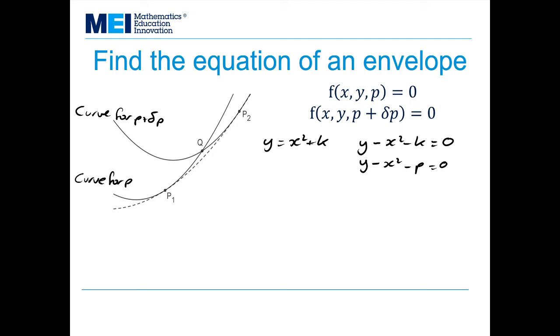So I know that f(x, y, p) = 0. And I also know that f(x, y, p + δp) = 0. So I can consider the difference between them. So f(x, y, p + δp) - f(x, y, p). And I know that this is just zero take away zero, so that's going to be equal to zero.